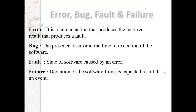Fault is a state of software caused by an error. For example, if we have a line of coding or execution where we have a number and we divide by zero — that is a math error. Failure is the deviation of the software from its expected result. It is an event where the output differs from the expected result.